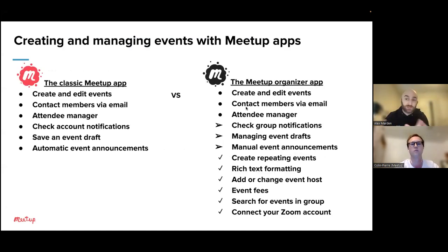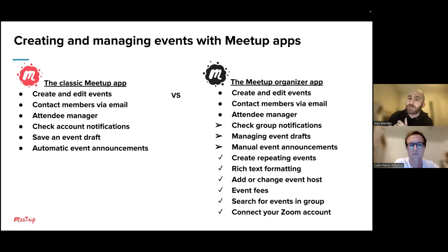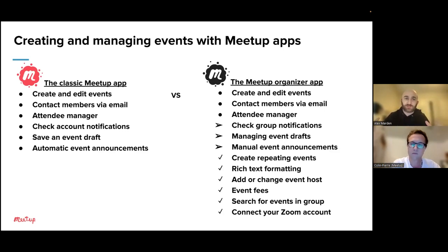Our next slide shows the difference about what you're able to do in each version of the app. On the left side of the screen, you'll see a bullet point list of what you can do in the earlier version of the Meetup app. You could create and edit events, contact members with your email clients through your phone, manage your attendees, check notifications for your entire Meetup account, save a single event draft, and when you publish an event it would be automatically announced. The Meetup Organizer app offers a much more robust set of features. The first three are the same — you can still create and edit events, contact members via email, and manage attendees. However, the next three have expanded functionality.